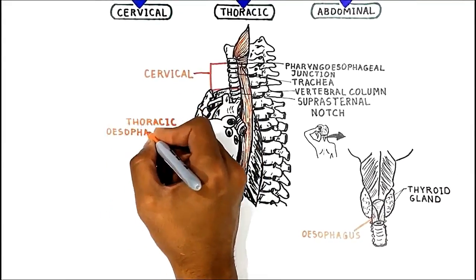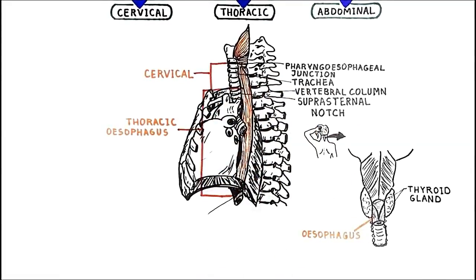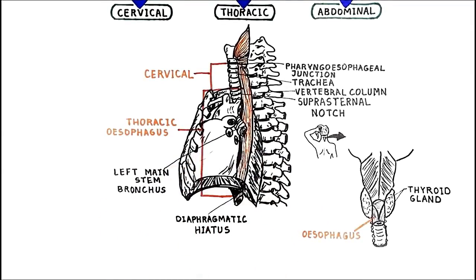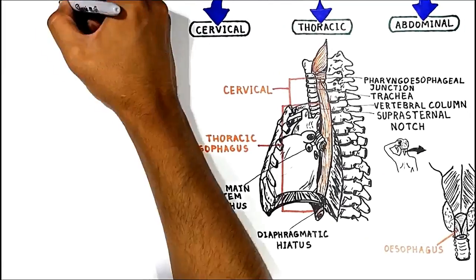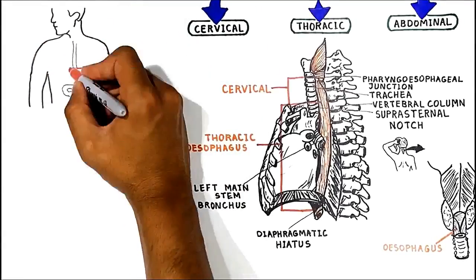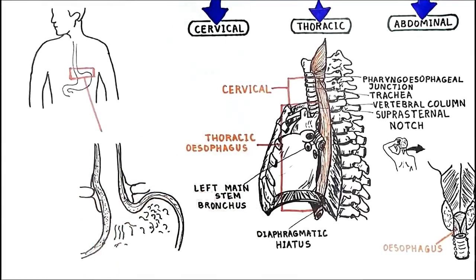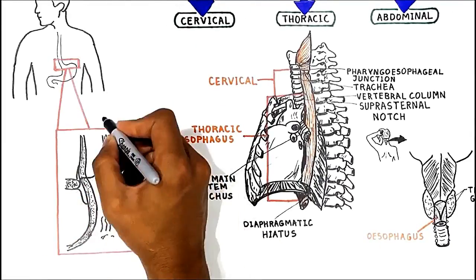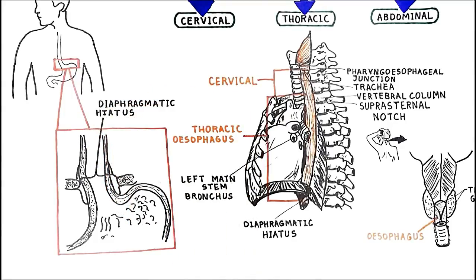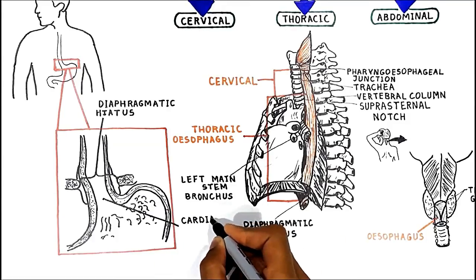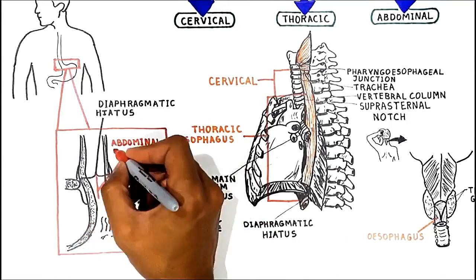The thoracic esophagus extends from the suprasternal notch to the diaphragmatic hiatus, passing posterior to the trachea, the tracheal bifurcation, and the left main stem bronchus. The abdominal esophagus extends from the diaphragmatic hiatus to the orifice of the cardia of the stomach, where the esophagus adjoins the stomach.